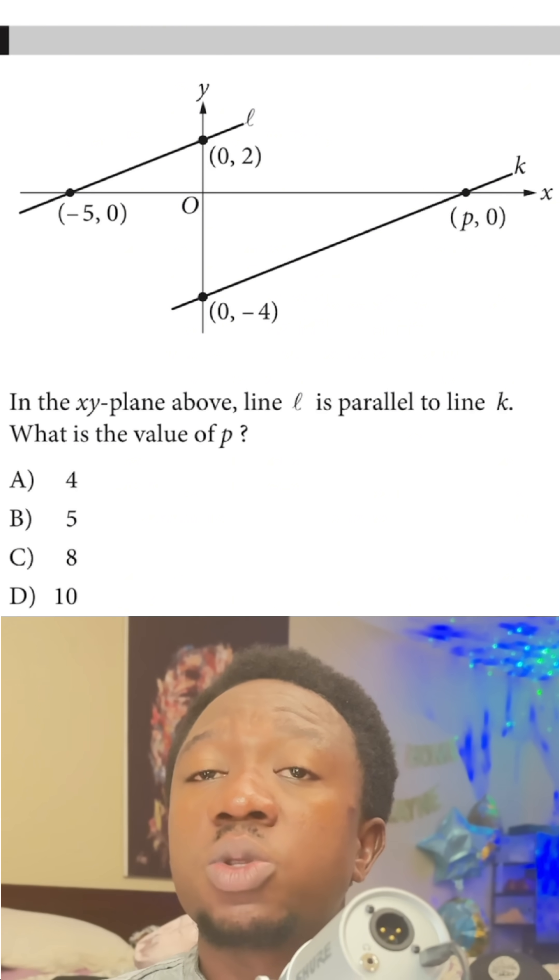one of the lines has two points given. Therefore, we can use the line to find the slope. Once we get the slope of the line that has two points, we can equate the slope to the other line to find the point which is missing. To begin with, let's name the X and the Y in both points on the line L.